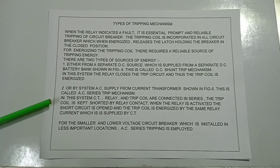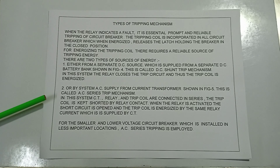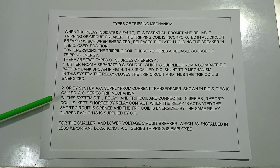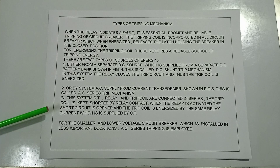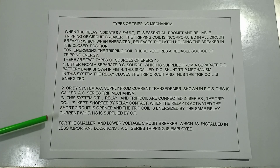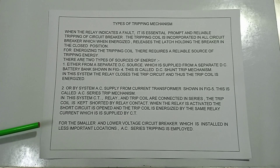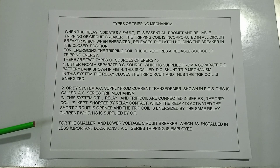In the AC series trip mechanism, the trip coil is kept shorted by the relay contact under normal conditions. When the relay is activated, the short circuit is opened and the trip coil is energized by the same relay current supplied by the CT. For smaller and lower-voltage circuit breakers installed in less important locations, AC series tripping is employed.